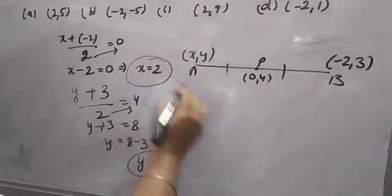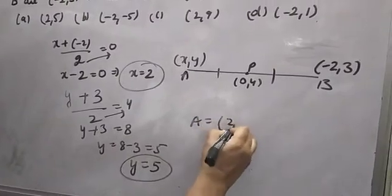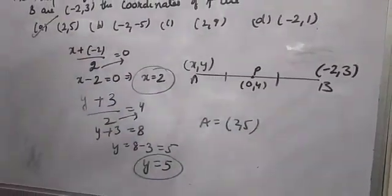So coordinates of A will be (2, 5). So option A you will take. Thank you.